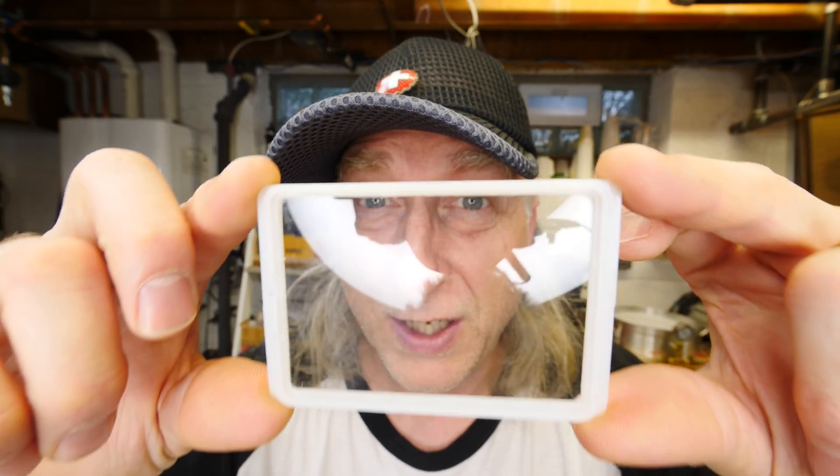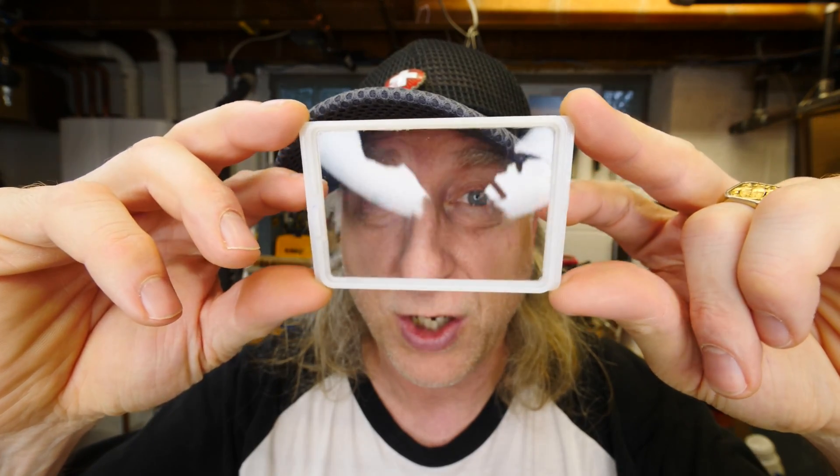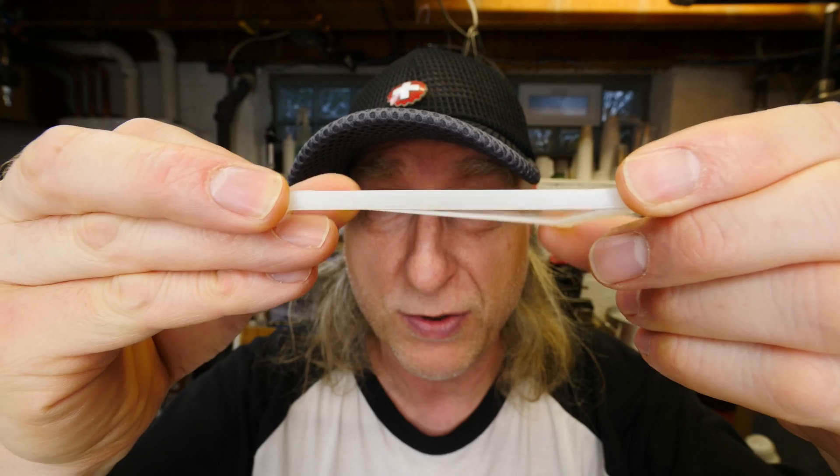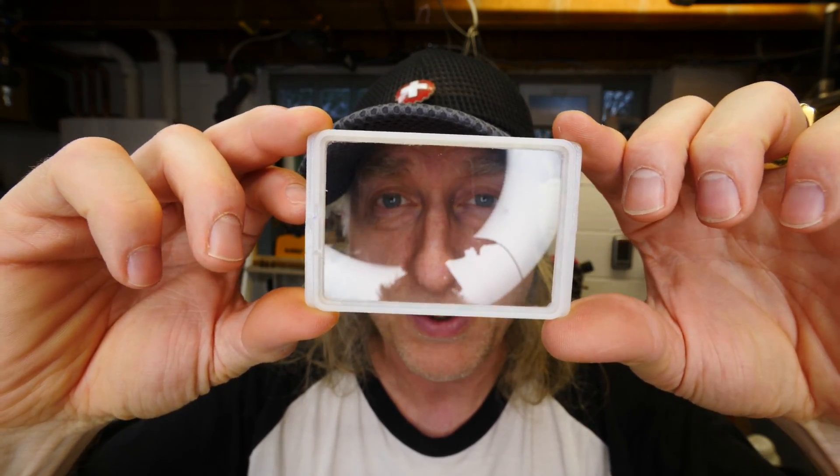I've been working on making a super cool prototype part. This is a piece of clear acrylic that's over-molded with flexible polyurethane. This is a lid and I'm going to show you how I make this prototype part.